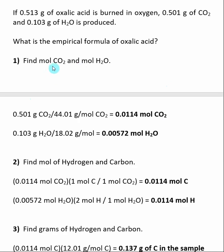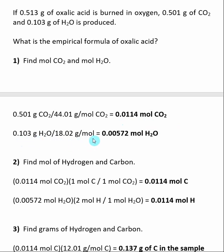First, we determine the number of moles of CO2 and H2O that we have captured in our combustion, by dividing by the corresponding molecular weight. We take our 0.501 grams of CO2 and divide by the molecular weight of CO2 to determine that we have 0.0114 moles of CO2. We captured 0.103 grams of H2O and divide by the molecular weight of H2O to find that we have produced 0.00572 moles of H2O.